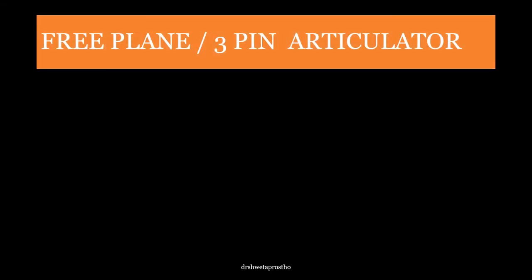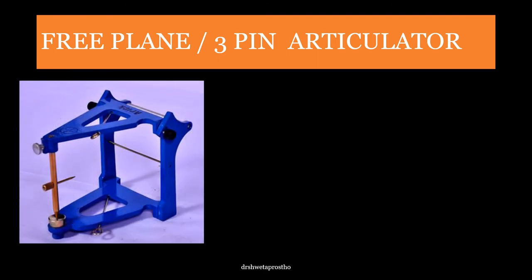The free plane and three-pin articulator — you know this articulator well, having done mounting of record rims for preclinical and clinical cases. First, which class is it? It is a Class 2 articulator, Type A, based on Bonneville's triangle. The distance between the two condylar elements is 110 mm, and the distance from the condylar shaft to the mid-incisal pin is also 110 mm, making a Bonneville equilateral triangle. It is non-arcon: the condylar elements are attached to the upper member and the condylar shaft is attached to the lower member.